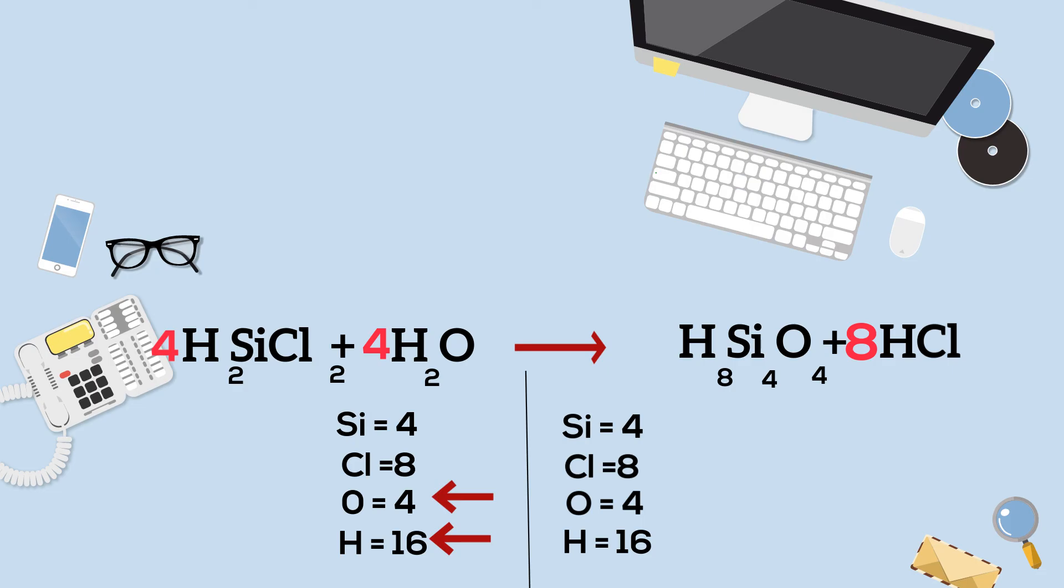So now when I go back, you will notice that the hydrogens from before where I put the eight in front of the HCl and it gave me 16, those are in balance. So if you'll notice the silicons in balance, the chlorines in balance, the oxygen is balanced, and the hydrogen.